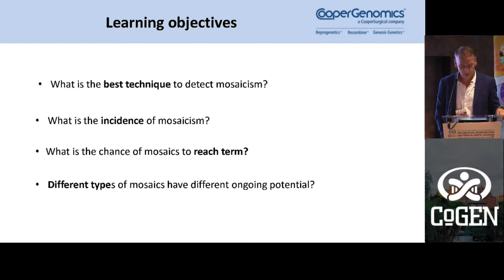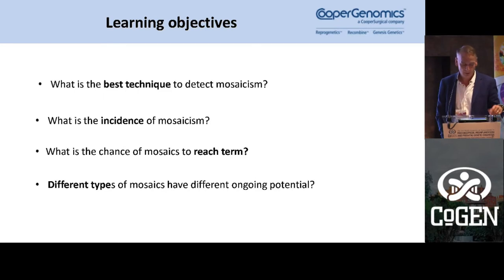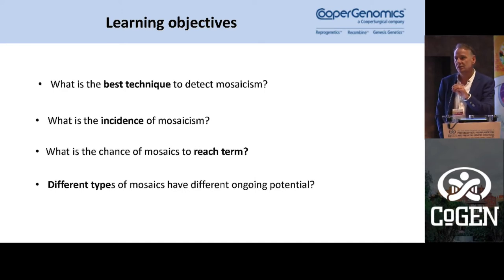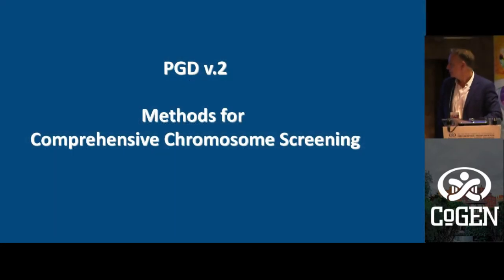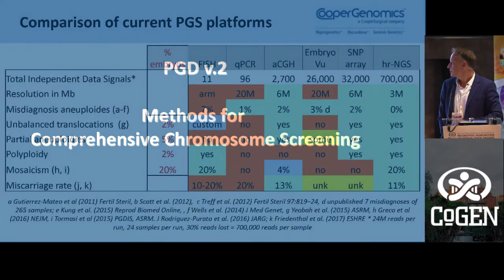The learning points are: to have a good grip of what the incidence of mosaicism is, what are the chances of these mosaics reaching term, and if there are differences between mosaics regarding their potential for reaching term. First, let's see which methods are best to detect mosaicism.